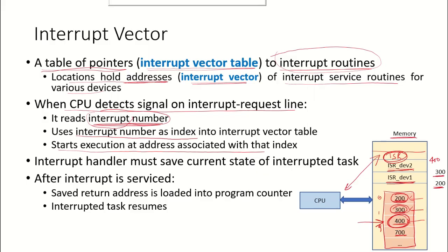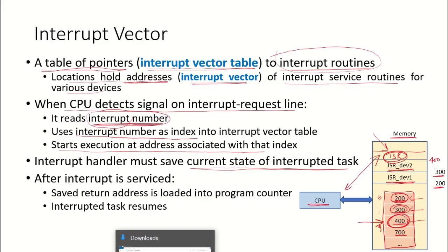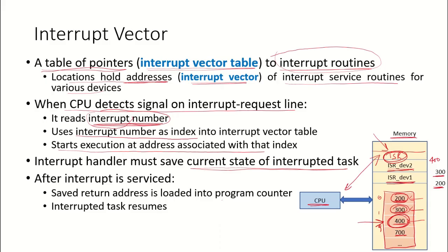Before the interrupt service routine runs, the interrupt handler must save the current state of the task that has been interrupted. The CPU was already running a program, so the state of that program has to be saved before the CPU can start running the ISR. Once the interrupt has been serviced, the return address of the previous task is loaded back into the program counter and the interrupted task is resumed.